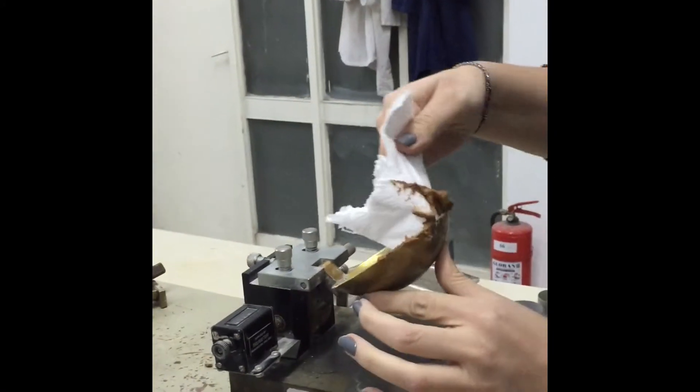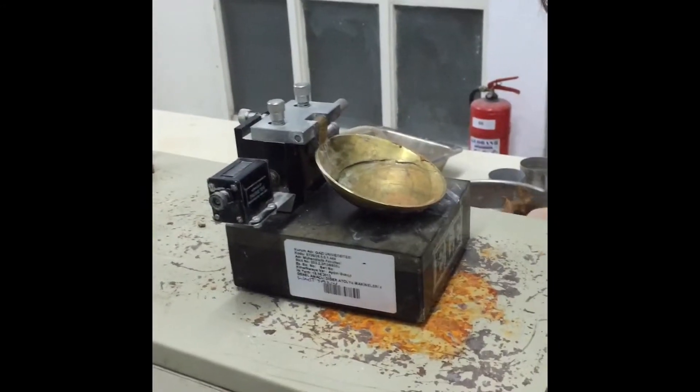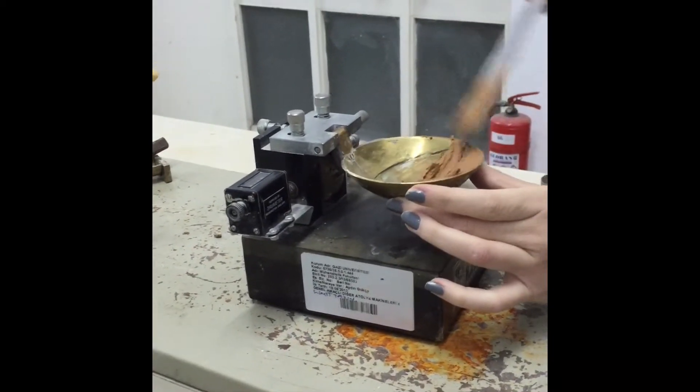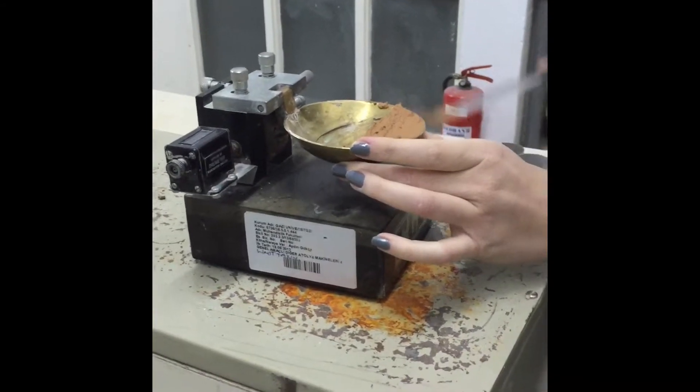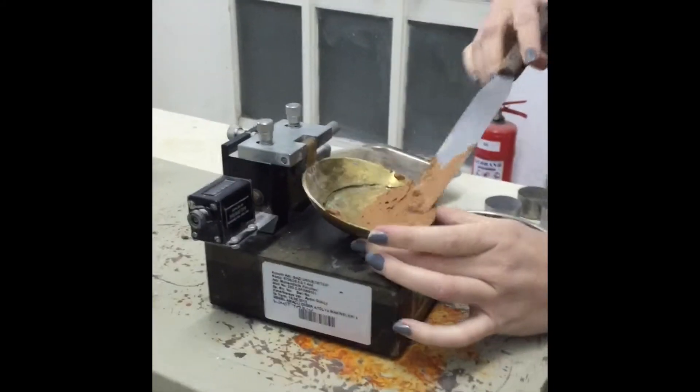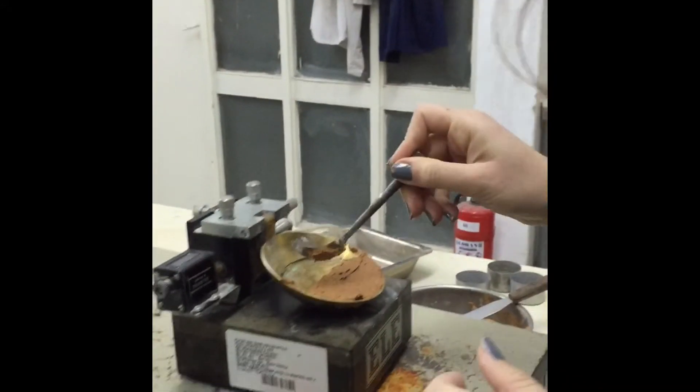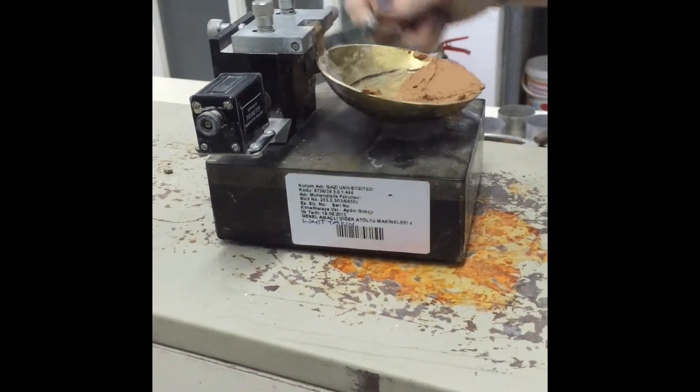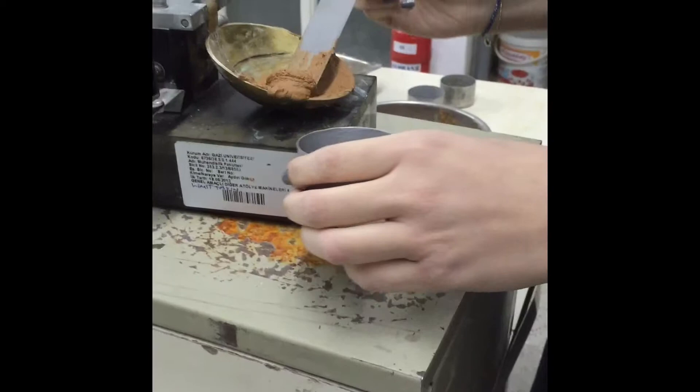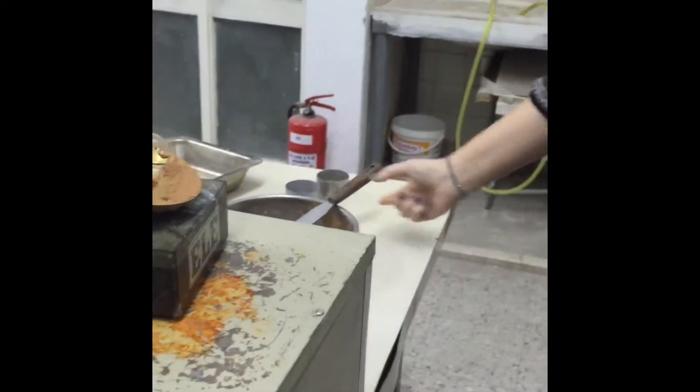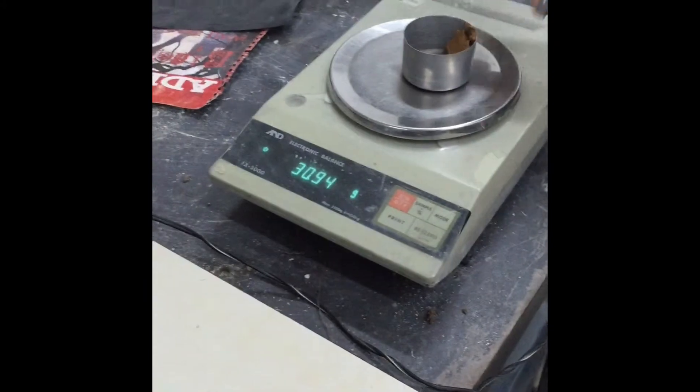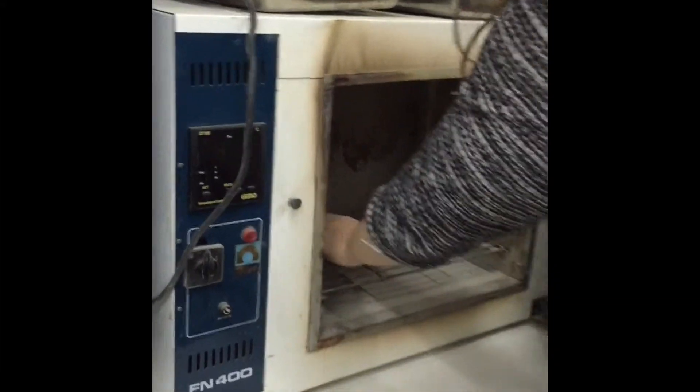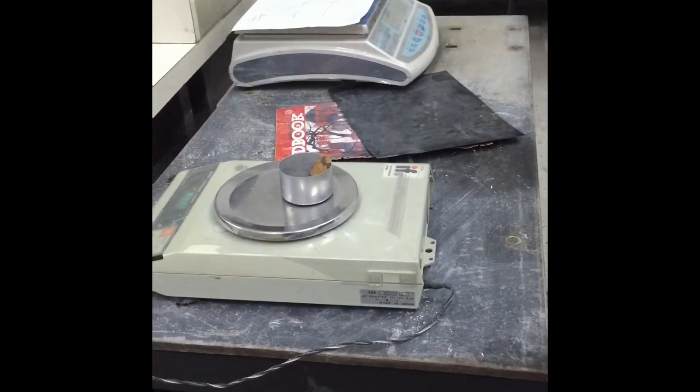Now we clean our Casa Grande apparatus and repeat the test once again. We make our groove with the grooving tool. We have our second sample. We measure the second weight. Again, the measurement of the weight.